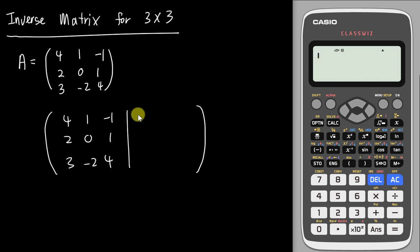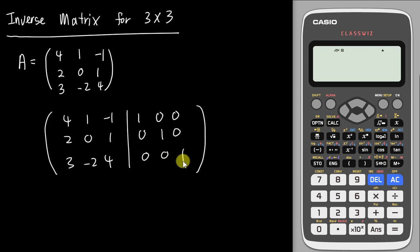On the right side will be the identity matrix for 3x3: 1, 0, 0, 0, 1, 0, 0, 0, 1.